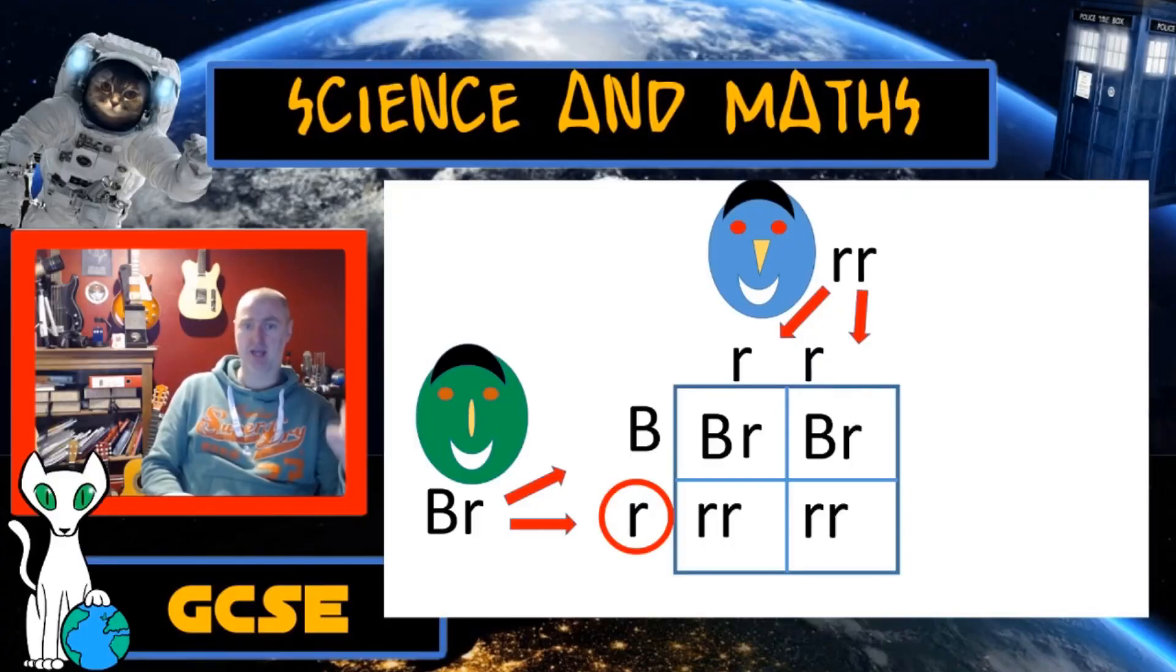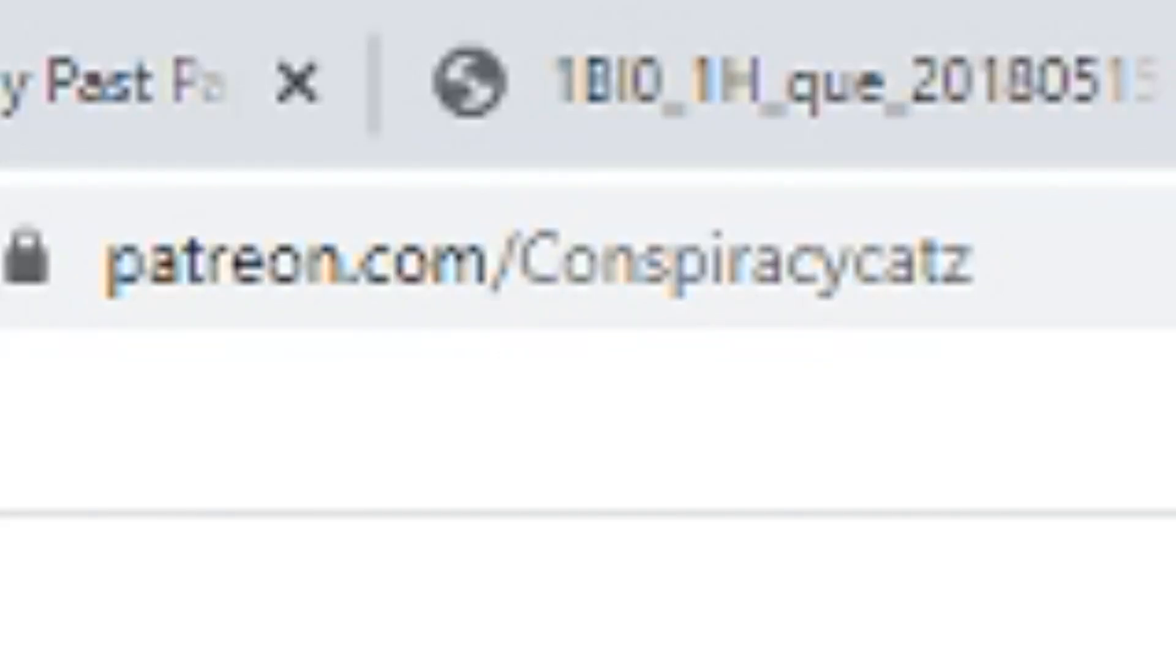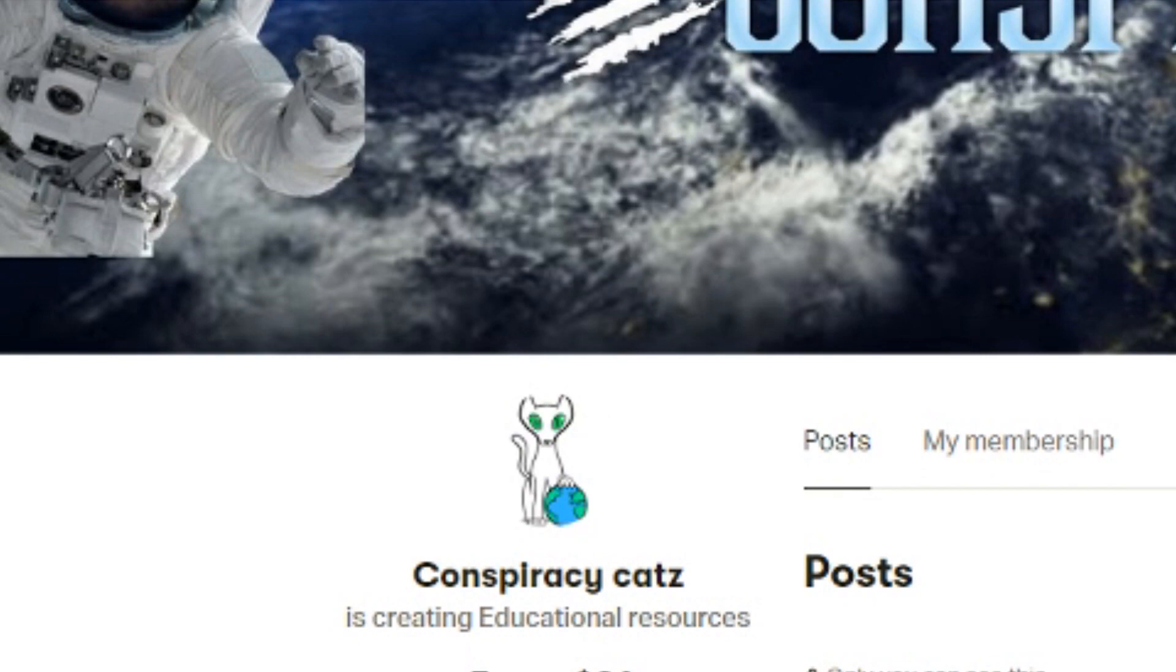Home tutors in the UK cost anywhere between £20 and £40 an hour but if you head over to the Conspiracy Cats Patreon you'll see that even my most expensive tier is no more than £10 a month.